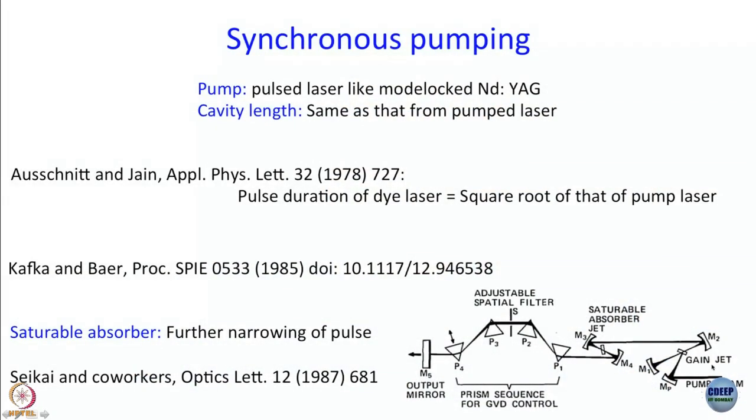Another thing to draw attention to is what is written here: 'gain jet.' Gain, of course, means the gain medium — rhodamine 6G dye. What is the meaning of 'jet'? When very short pulses go through any medium, they get broadened. So in order to get short pulses which are picosecond or lesser, you don't want any extra component in the path.